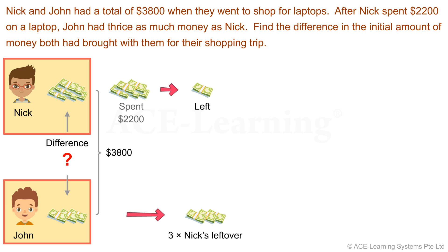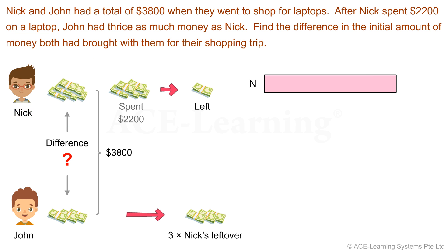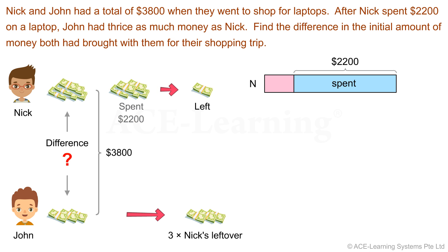From our diagram, we can see that both Nick and John had different amounts of money at first. Did John spend any money? No, he did not. Only Nick spent some of his money. We can represent Nick's amount of money with a long rectangular bar. Nick spent $2,200, so let's split this bar into two parts. Let's indicate the second part as spent. The remaining part is what Nick had left after his expenditure.